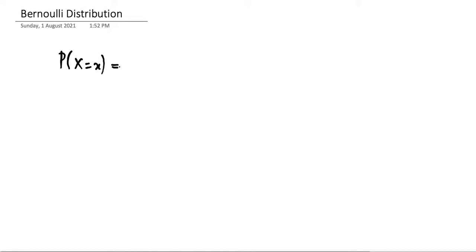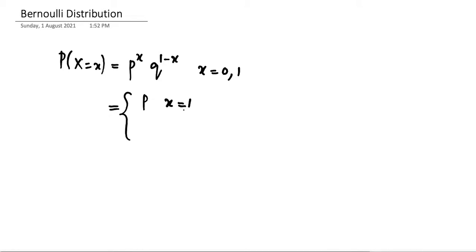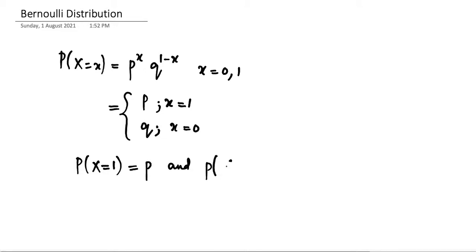Bernoulli distribution. The PMF, or probability mass function, of the Bernoulli distribution is: probability of X equal to x, equals p raised to x into q raised to 1 minus x, where x is equal to 0 or 1. This can also be written as p when x equals 1 and q when x equals 0. So the probability of the Bernoulli random variable X taking the value 1 is p, and taking the value 0 is q, which equals 1 minus p.